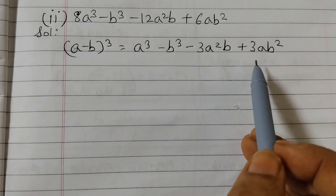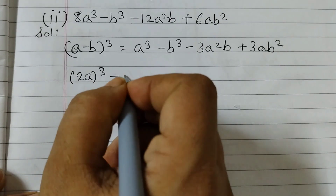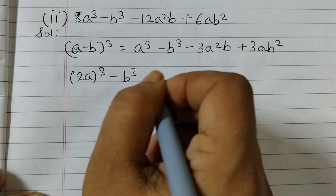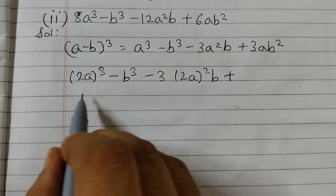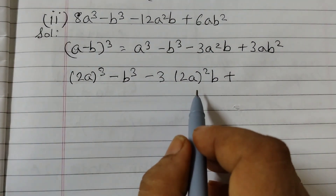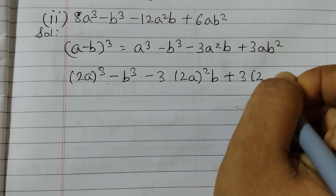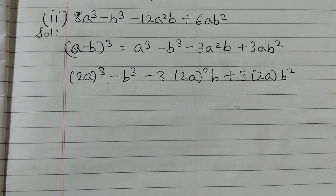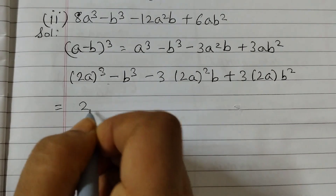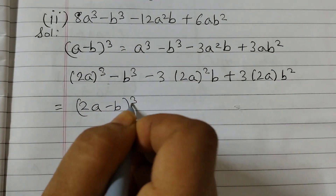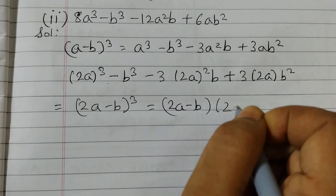We write (2a)³ minus b³ minus 3·(2a)²·b plus 3·(2a)·b². We have identified a = 2a and b = b, so that equals (2a - b)³, or written out as (2a - b)(2a - b)(2a - b).